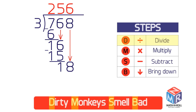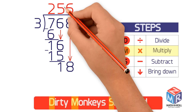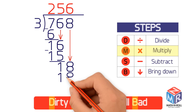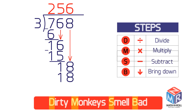Write 6 above the 8. Multiply 3 by 6 and place this below the 18. Now subtract 18 from 18 to get 0. Because you have no more numbers to bring down, you are finished, and the answer is 256.